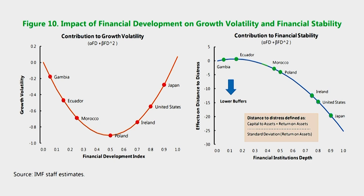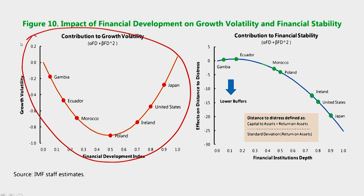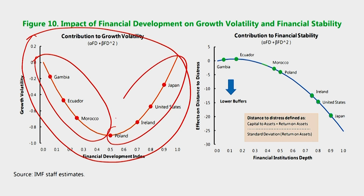When it comes to financial development and economic stability, the data show that the relationship is also non-linear. This finding is in line with recent studies. Financial development initially lowered growth volatility as it allowed for an expansion of opportunity for effective risk management and diversification. After a certain point, volatility began to increase again.